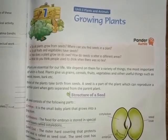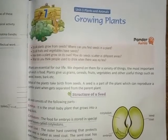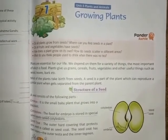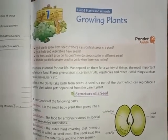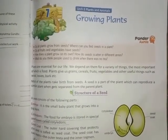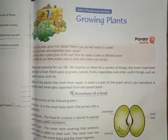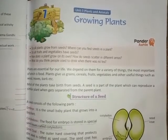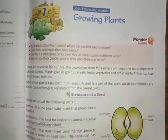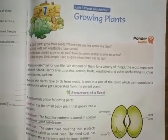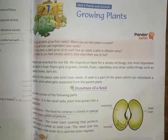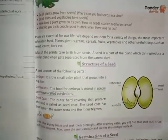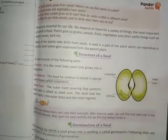A seed is a part of a plant which can reproduce a similar plant when it gets separated from the parent plant. Means a plant reproduces the same type of plant. A seed is a part of a seed plant which can grow into a new plant.